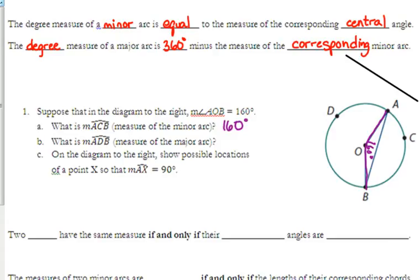So how much does that leave us for arc ADB? 200. We used up 160 of our total 360, and we've got 200 left.